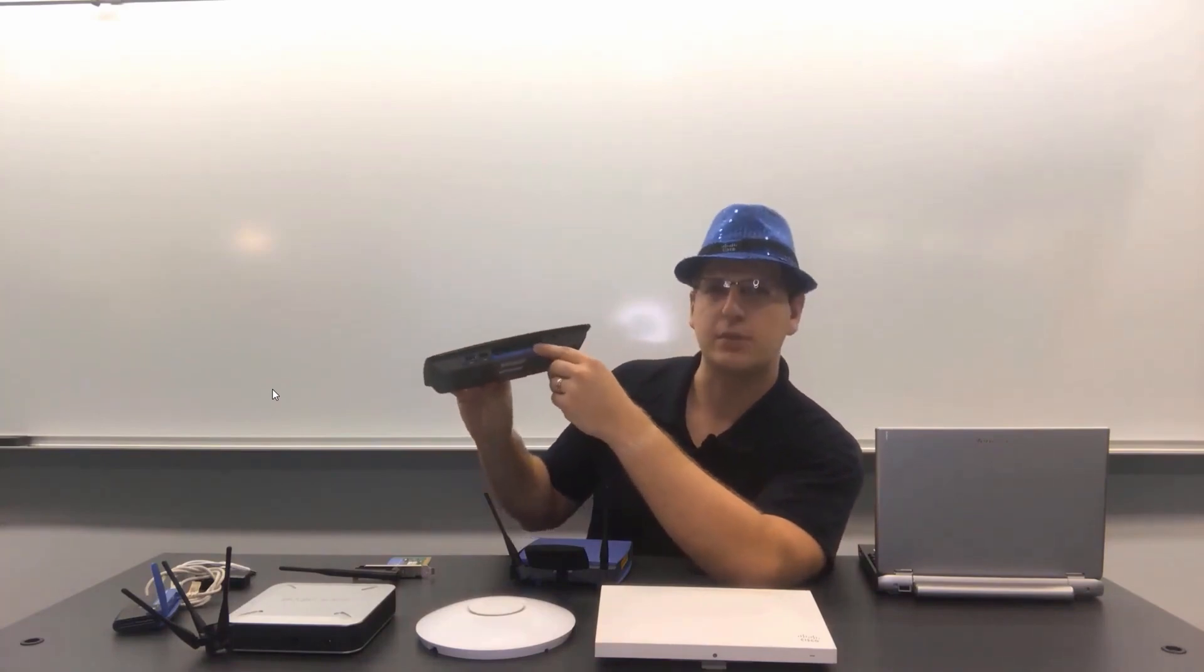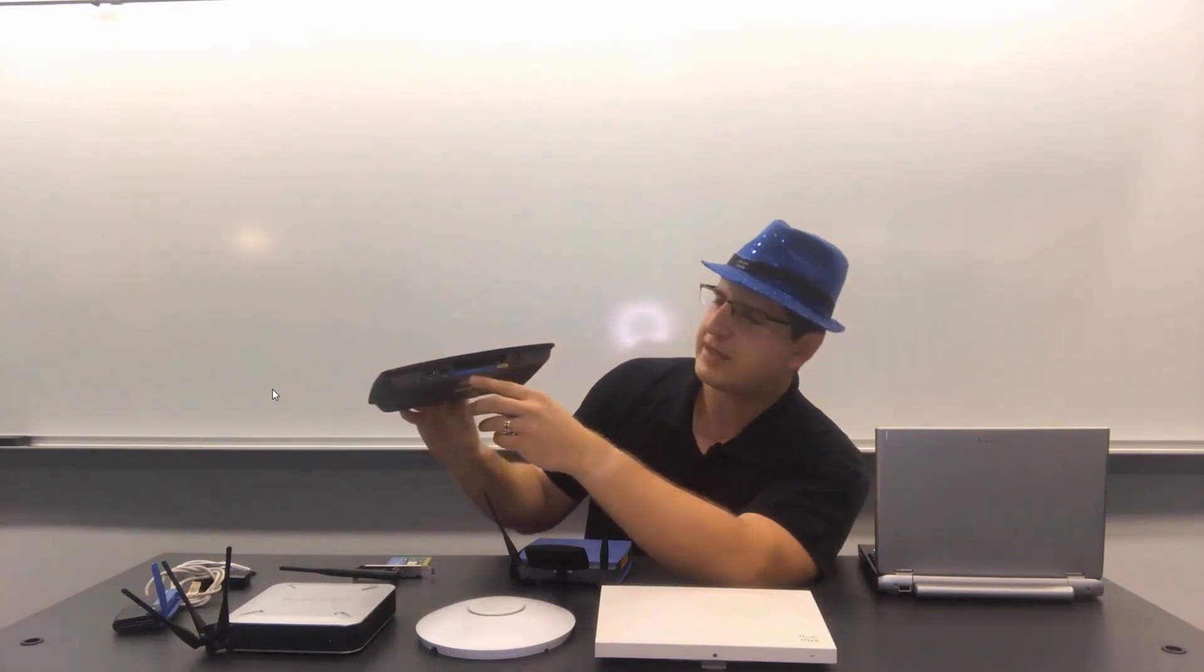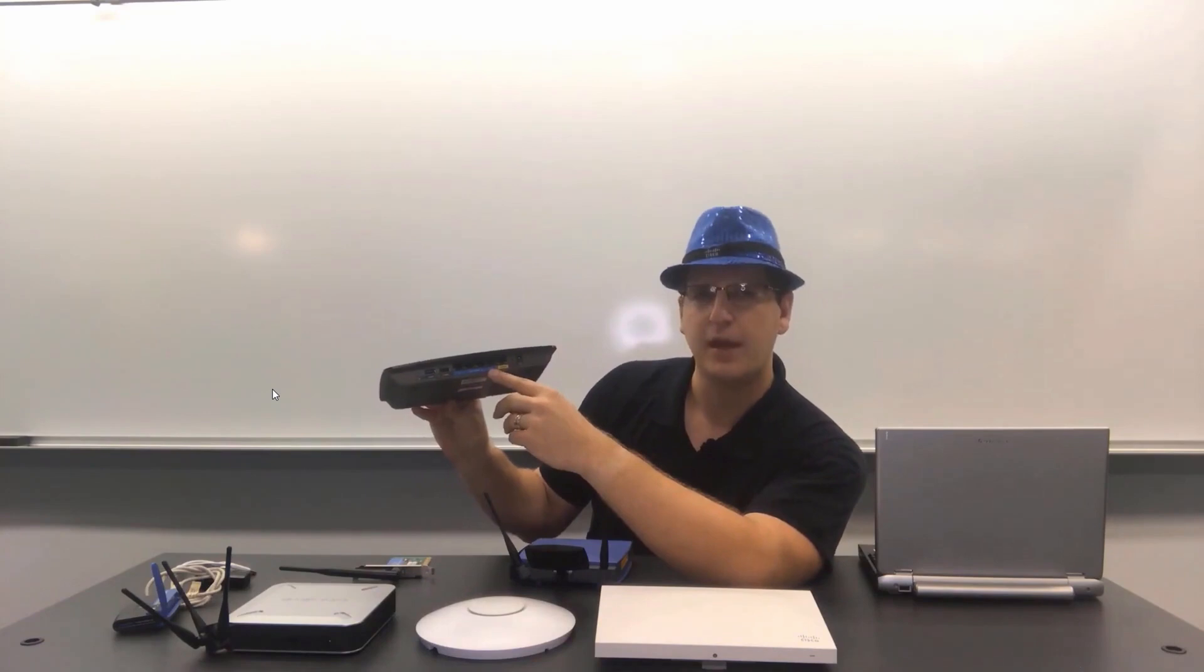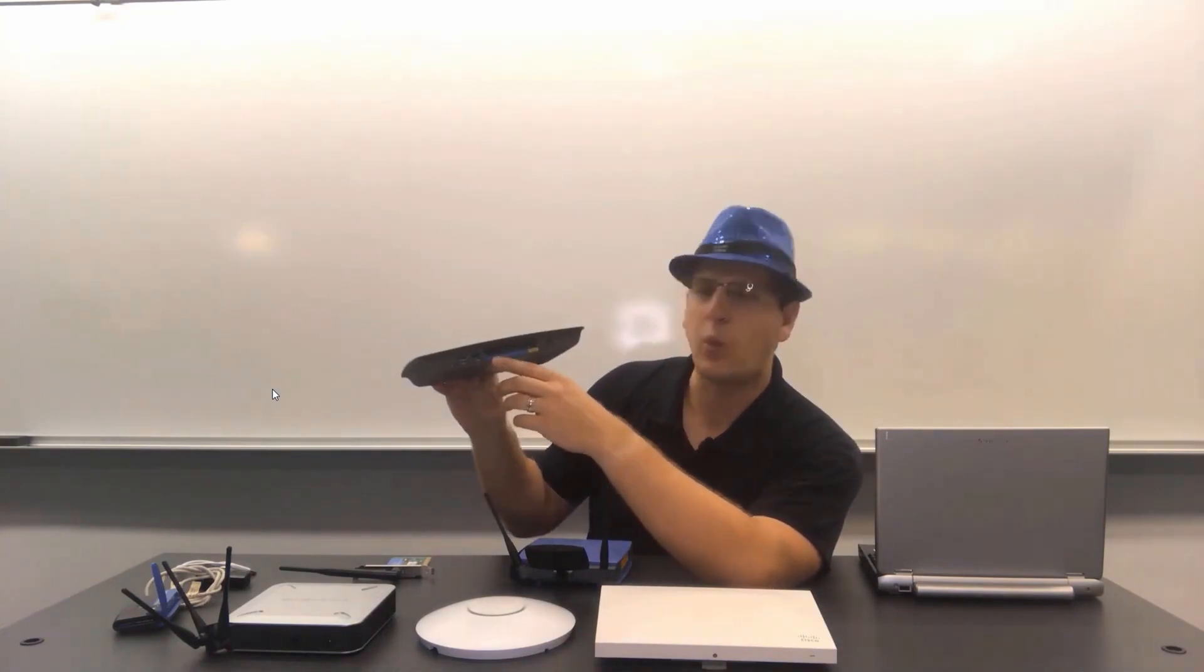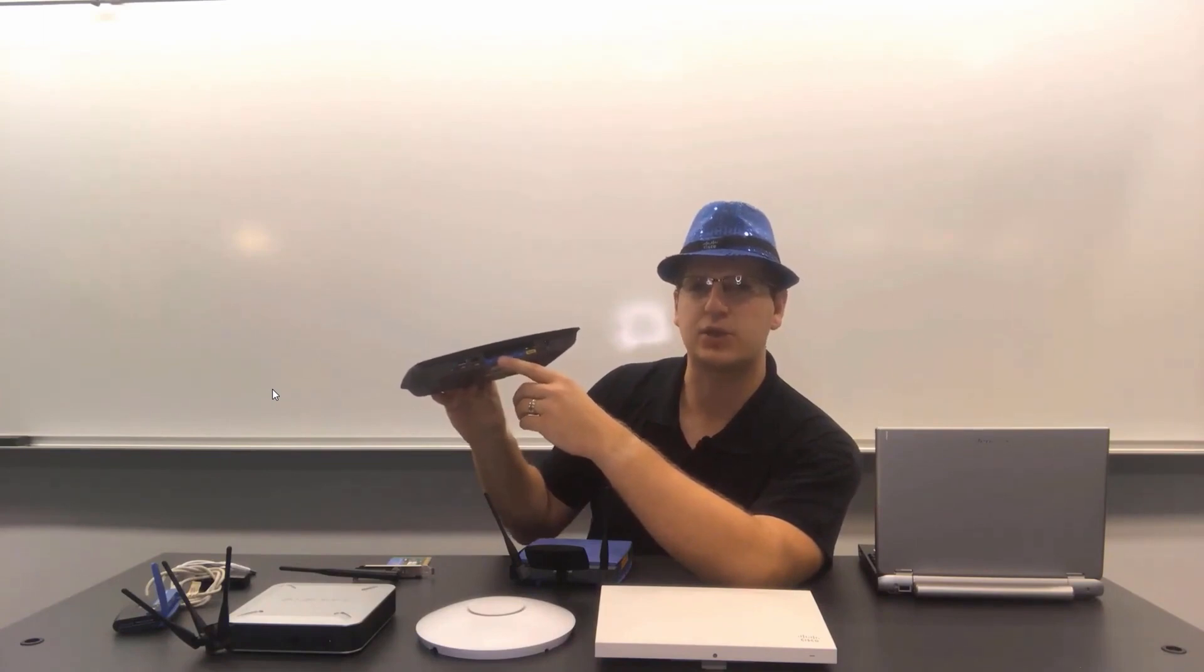Now, these wireless routers commonly have three functions. Those three functions being, number one, a switch built in. For example, I've got a set of blue ports here. There are four of them. That's an integrated switch in this wireless router. You plug your wired devices into that switch.